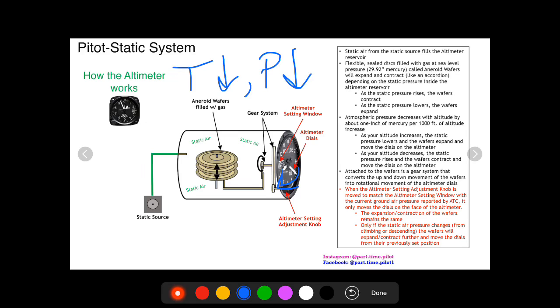So it is going to read that you are higher than you actually are. And if the temperature is higher, that means the pressure is higher, and that means your aneroid wafer is going to think that you are descending. And so your altimeter is going to move down and it's going to read that you are lower than you actually are.